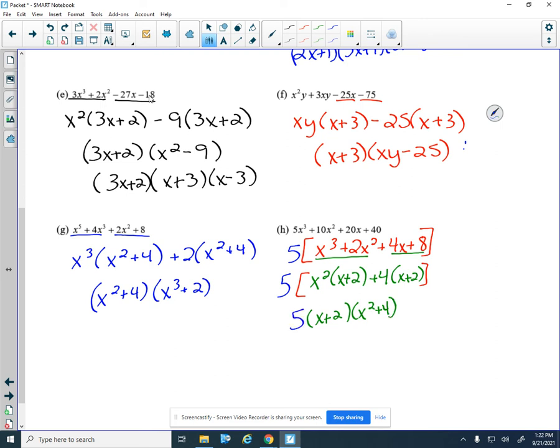If you didn't notice the 5 in the beginning, the 5 would be stuck in one of these two factors, and you would have to take it out at the end, which, as I said, is less likely. If you catch GCFs first, that's always the best way to do them.